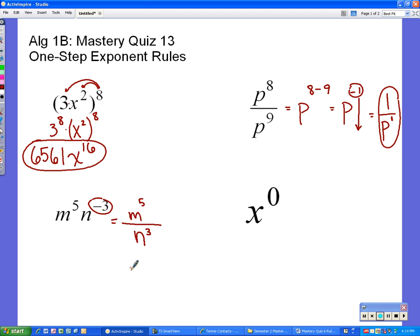So we end up getting m to the 5th is left on top, n gets moved to the bottom, and the negative 3 becomes a positive 3. And that's the final answer there.